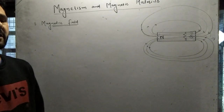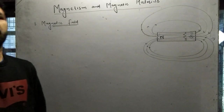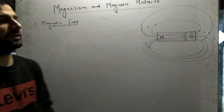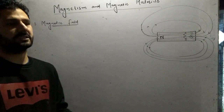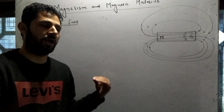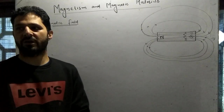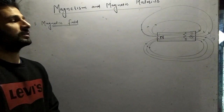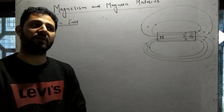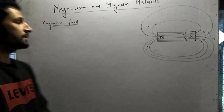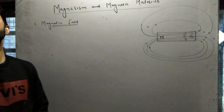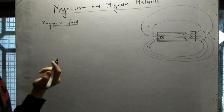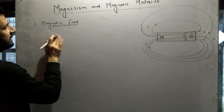Now let us discuss magnetic field lines. This concept, like Faraday's concept of electric field lines, is used to represent fields. Electric and magnetic fields cannot be seen — we can only feel them. They act as non-contact forces. So we represent them with field lines. The magnetic field is represented by magnetic field lines. A magnetic field line is defined as an imaginary line which gives the pictorial representation of the magnetic field.